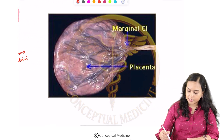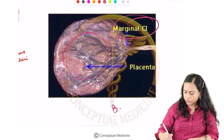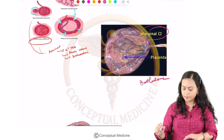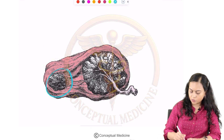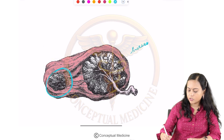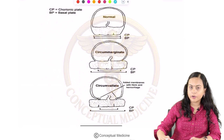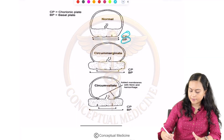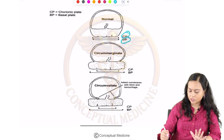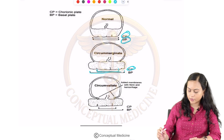This is battledore placenta — the placenta with a marginal cord insertion. This is also a succenturiate placenta with an accessory lobe. This is extra-chorionic presentation. Normally the chorionic plate and basal plate are of the same size, but in extra-chorionic presentation the chorionic plate is going to be smaller than the basal plate.